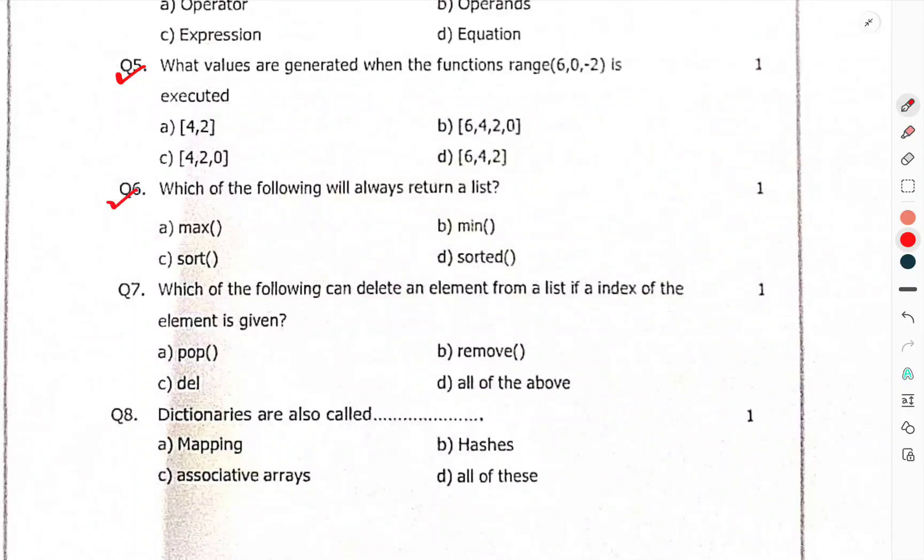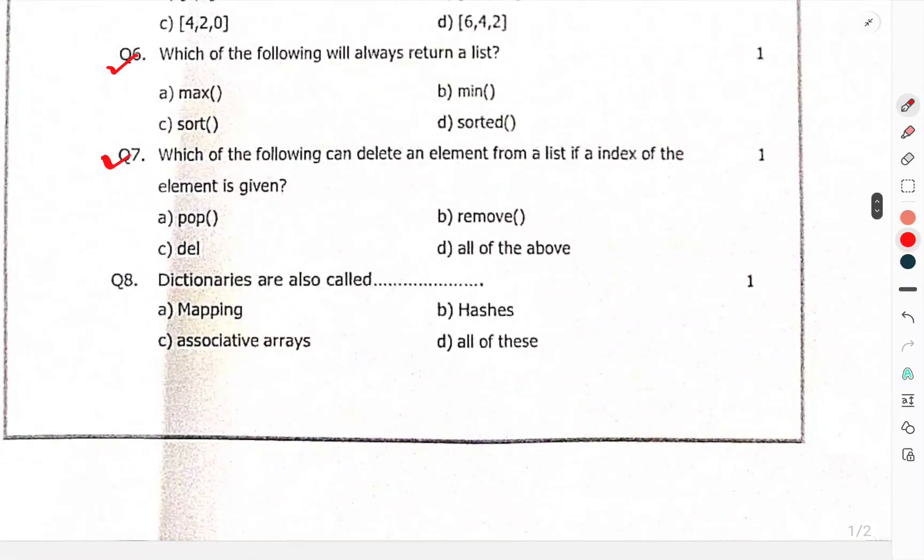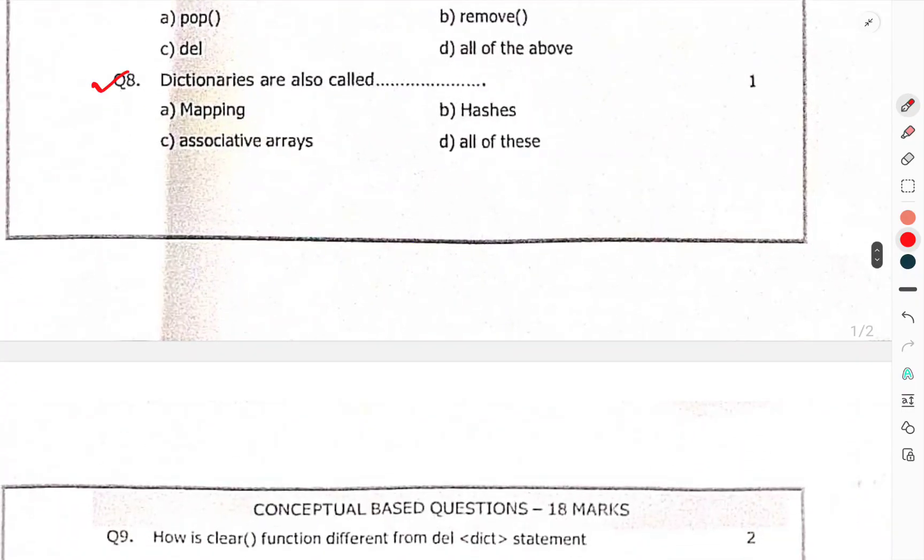Which of the following will always return a list? Which of the following can delete an element from a list if an index of the element is given? Dictionaries are also called...